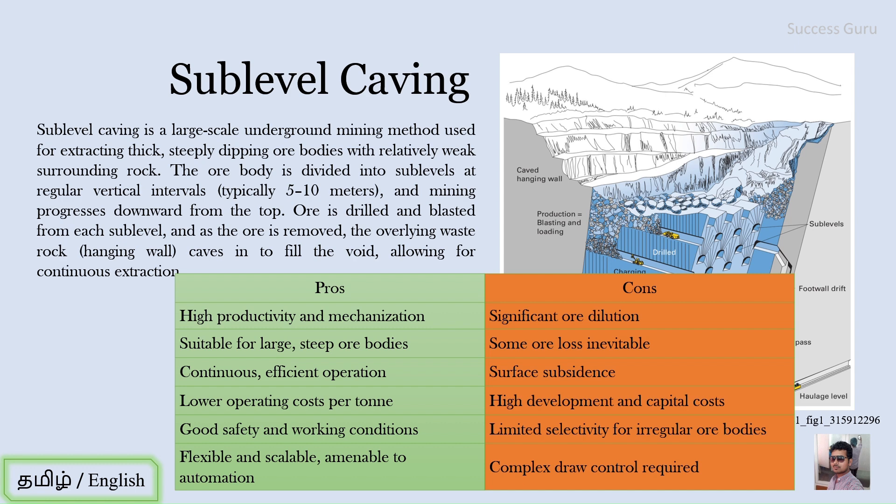Fifth, since it is an inclined formation, there is not much dust and gas accumulation underground, and ventilation is quite convenient. This method provides good and safe working conditions. Sixth, it is flexible, scalable, and amenable to automation, given the convenient size and orientation of the ore body.